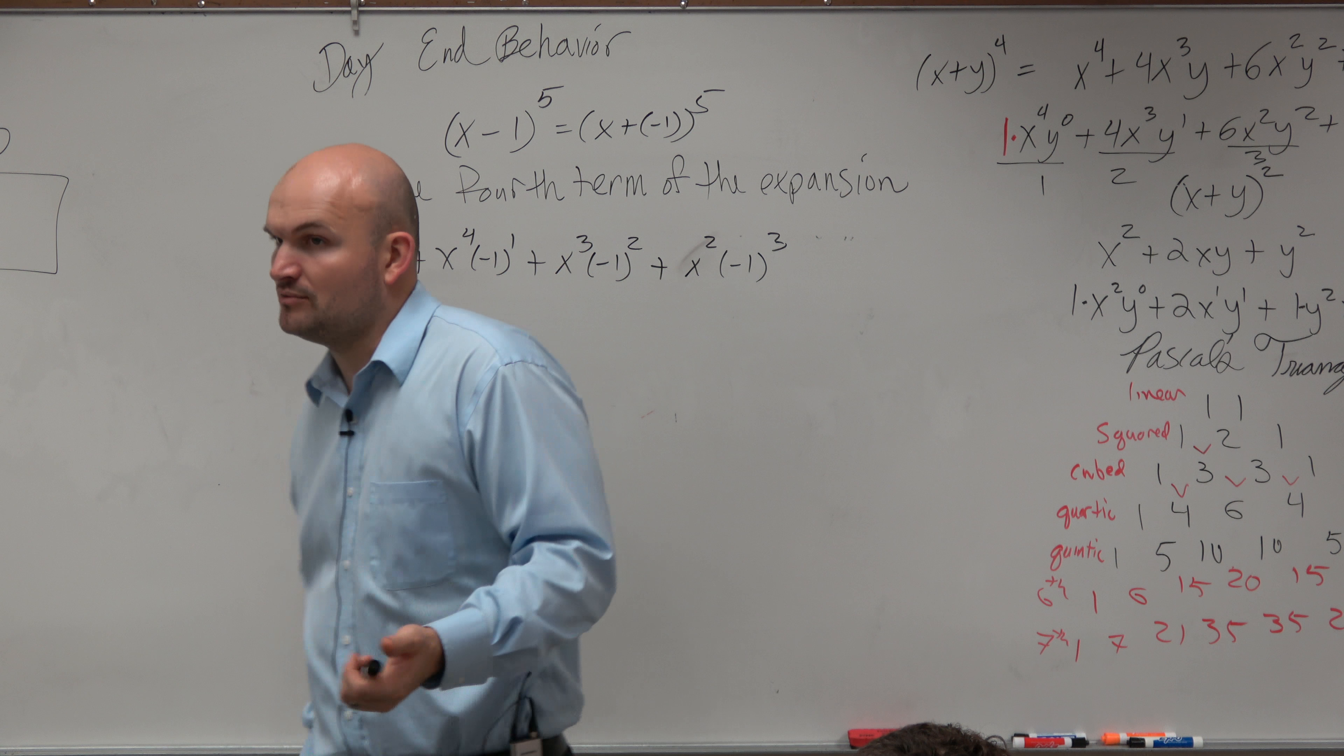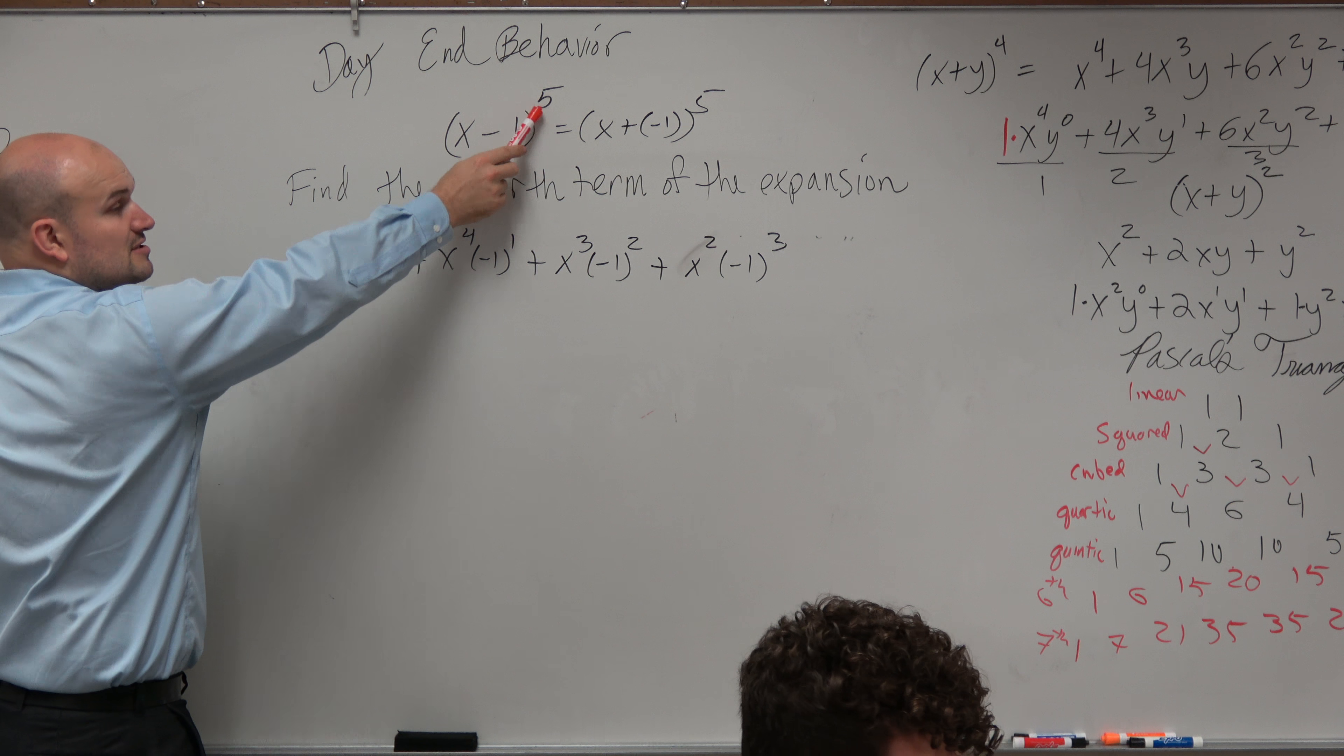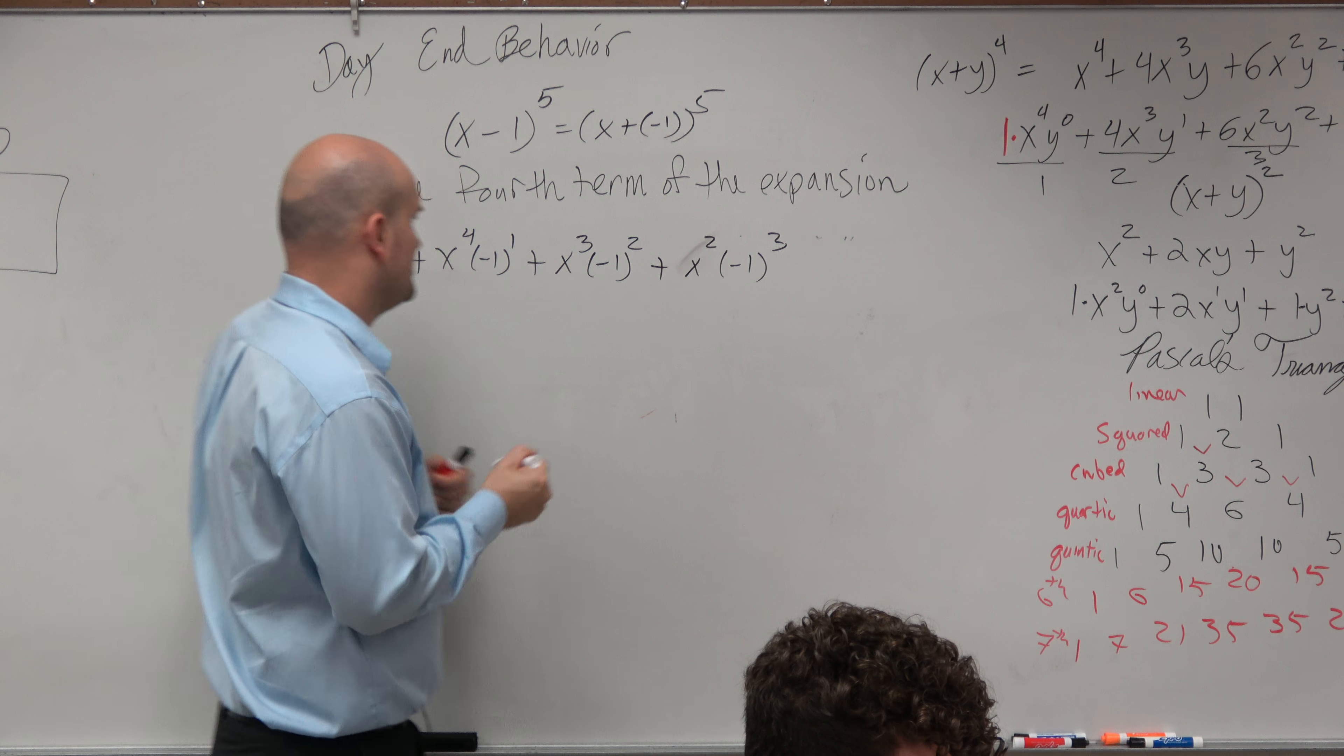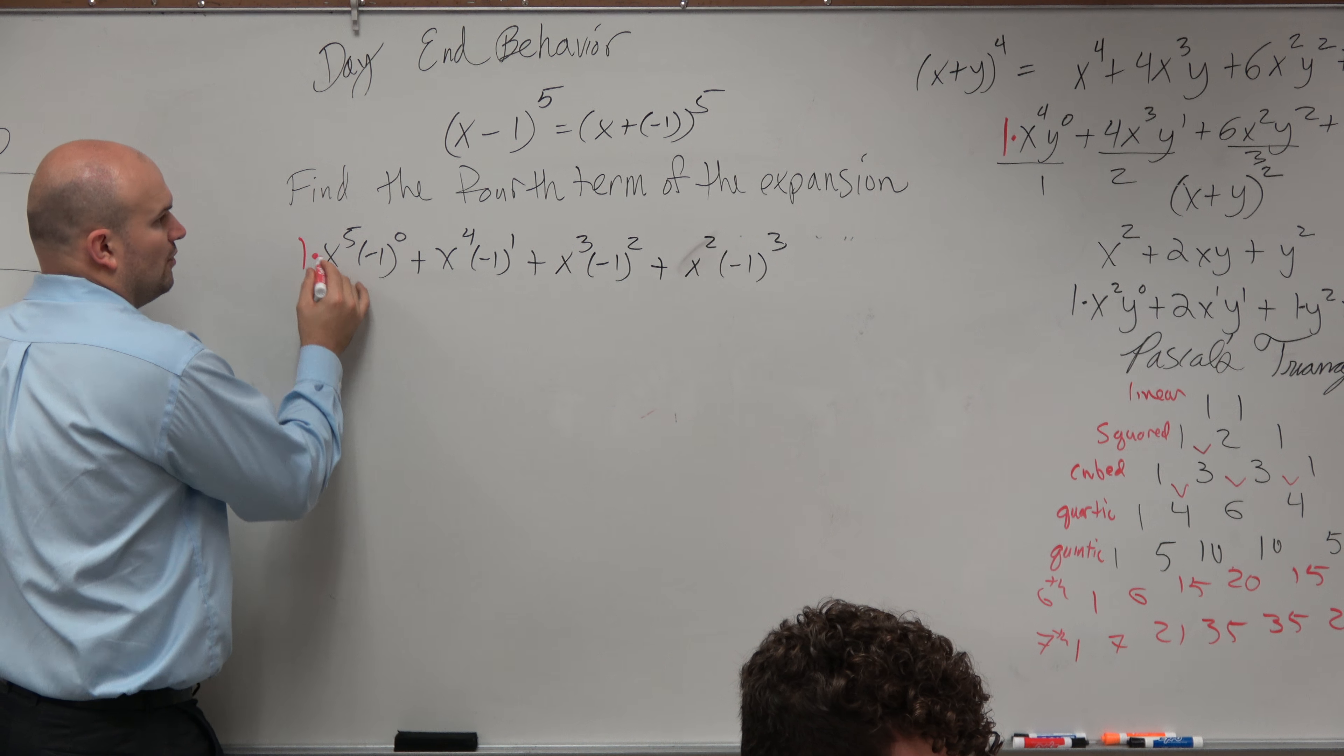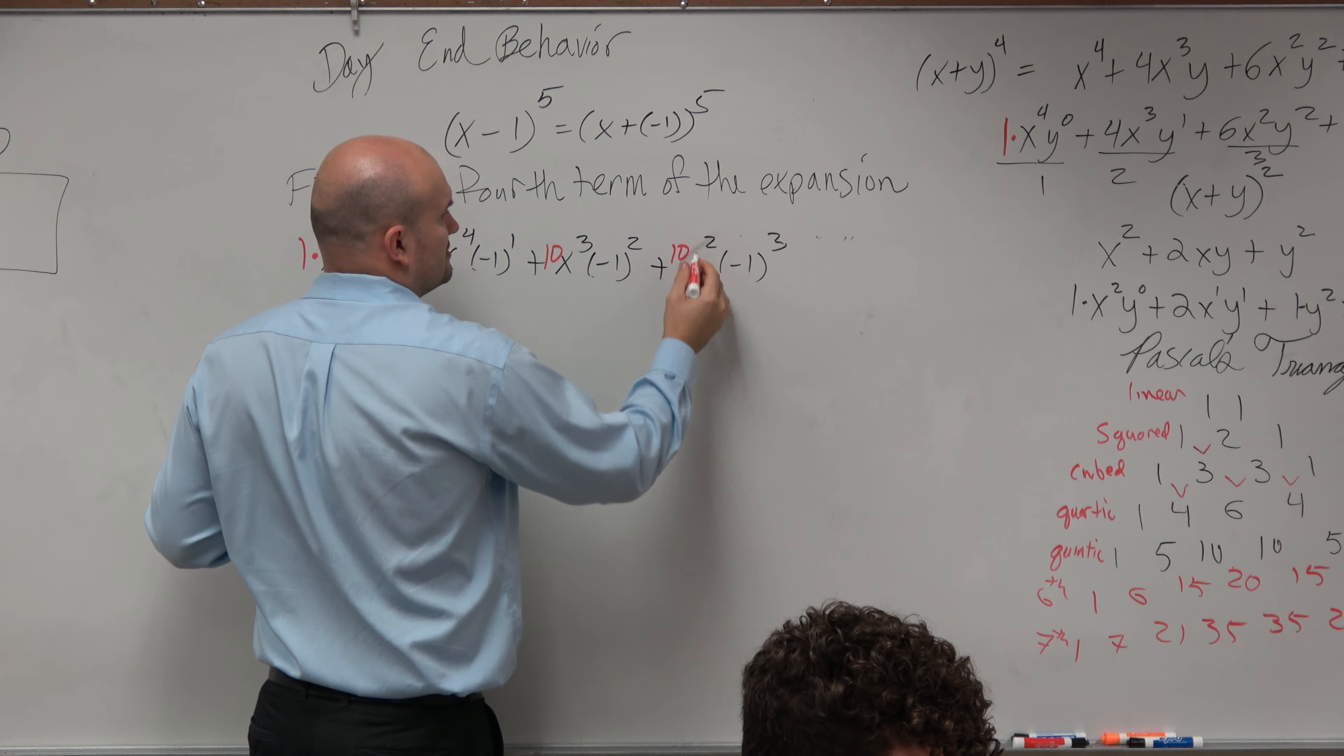Now the other thing, though, is we have to figure out using Pascal's triangle. And by using Pascal's triangle, we have to the fifth. So that means we need to use the fifth row, which is going down to the kintic. So therefore, my coefficients would be 1, 5, 10, 10.